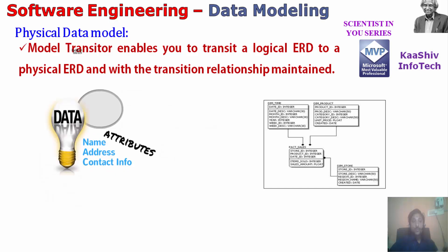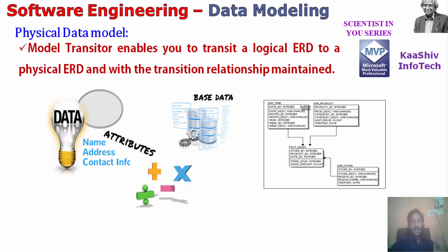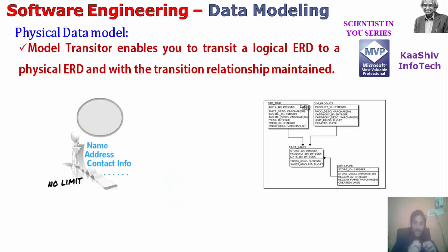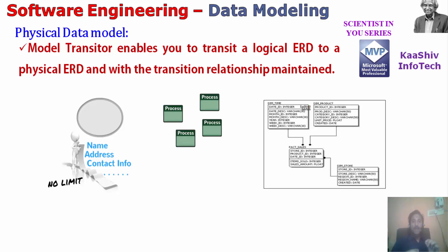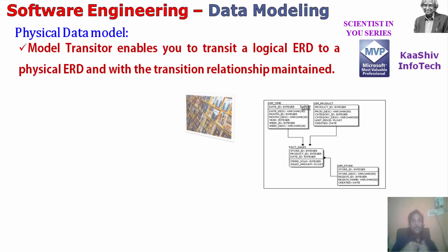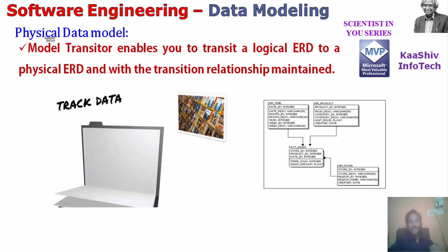The next level is nothing but your physical data model, which is really different. The reason is, considering student details — student ID — what kind of data type I can have to store it on the hard disk, and how much data it will occupy to physically store into the database. That's referred to as your physical data model.